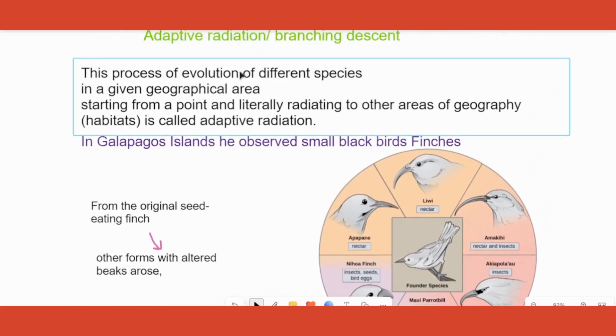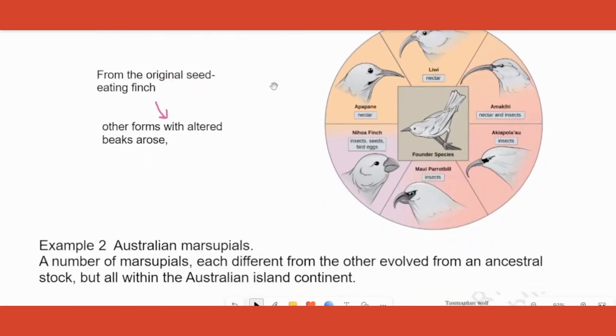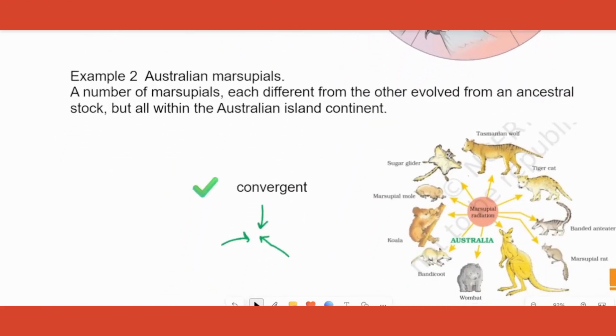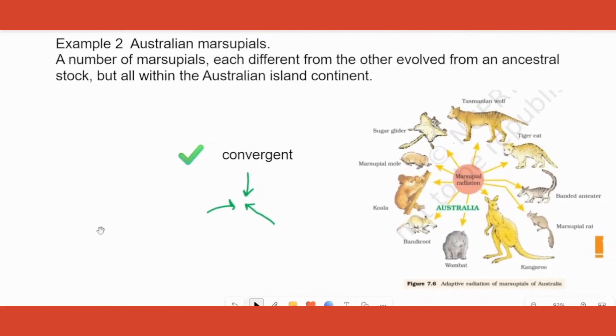Now please read the definition again. It is a type of evolution process, evolution of different species, all these species in an isolated or given geographical area starting from a point, literally radiating to other geography. After evolution they all radiated to different geographical areas. That is called as adaptive radiation. Please explain it using Darwin's finches if no other specific things are asked.